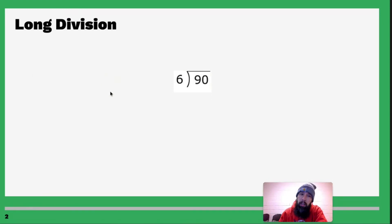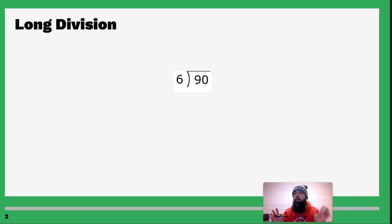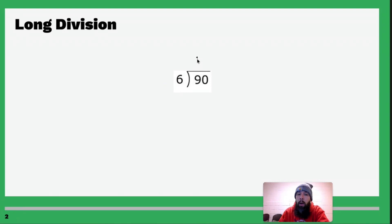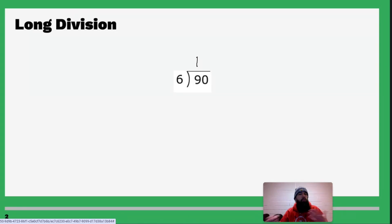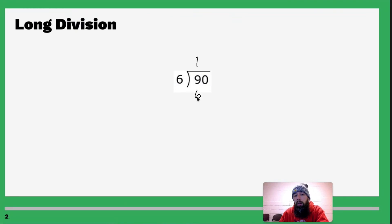The first problem is 90 divided by 6. We are going to ask ourselves: how many sixes fit in 9? We're only going to focus on one digit at a time if we can. If we can't, then we do more digits. So how many sixes fit in 9? One six fits in 9 — one six goes into 9. Six times one is six, but I can only fit one six into nine; if I said two, that would be twelve, which is too much. So six goes into nine one time. We write the 1 up here, then multiply 1 times 6 and write it underneath the 9.